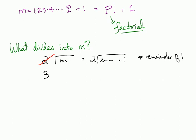Maybe you see where this is going. Does 3 divide into m? Again, you end up with a remainder of 1. 3 divides into p factorial, but then you have that 1 left over.